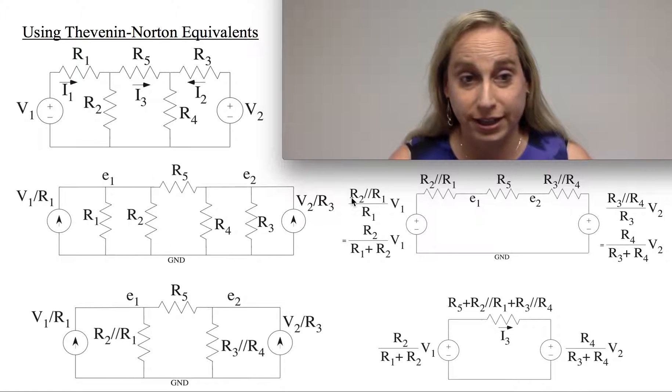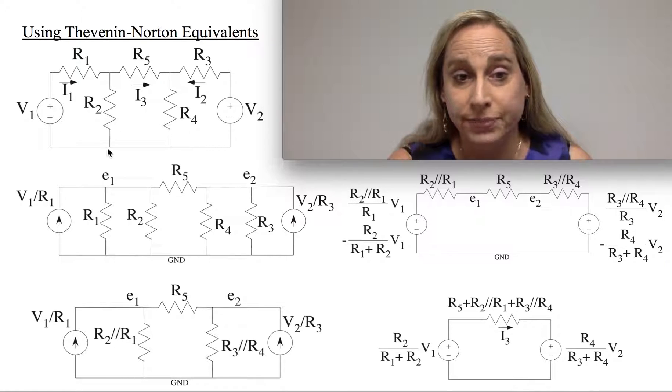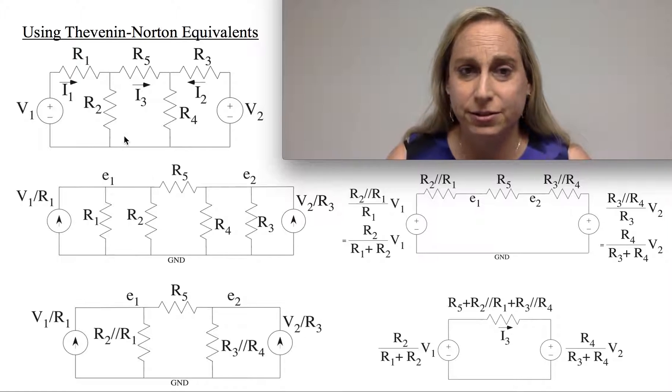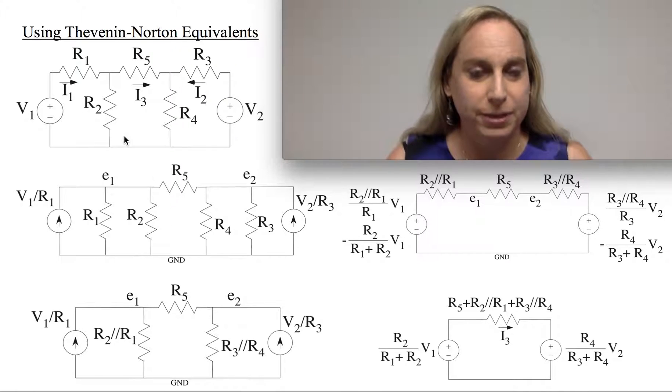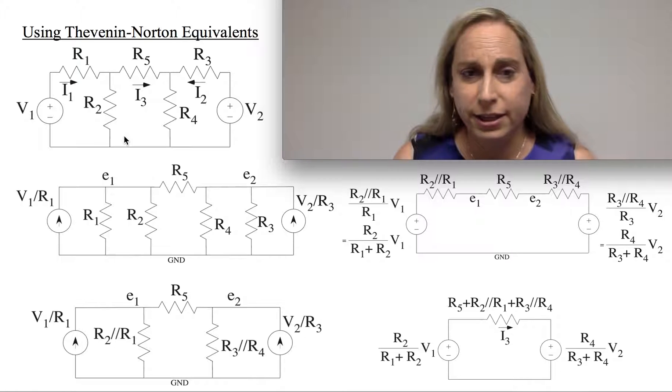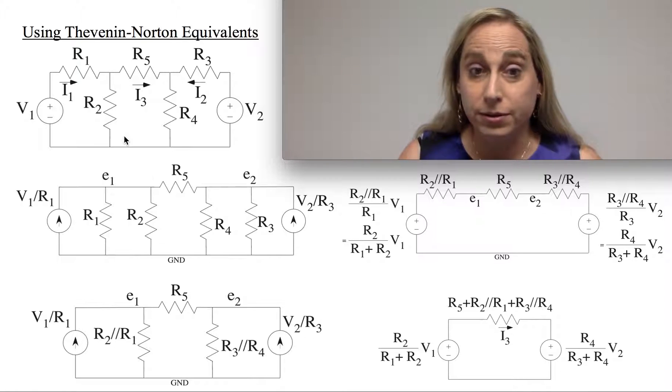So I might be able to take a circuit like the one over here. And what you may realize is that this would be a fairly detailed circuit to write equations for. You could certainly write node equations or mesh equations, and that would work. You could work through it, maybe solve the matrices, maybe do it in other ways. But I want to think about what happens when you use a Thevenin and Norton equivalent for this.